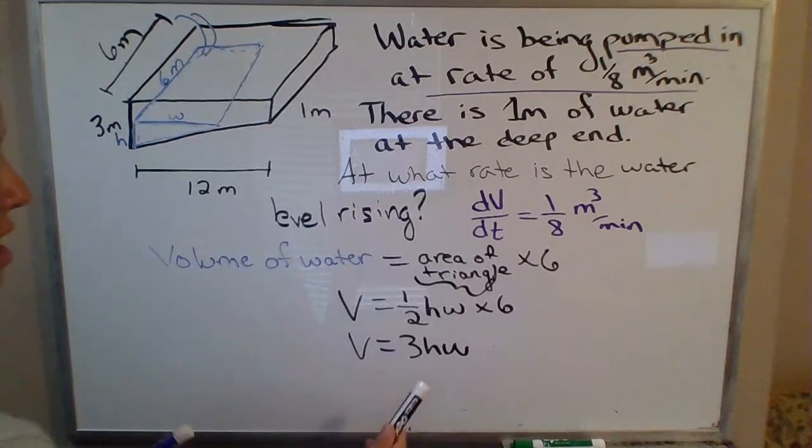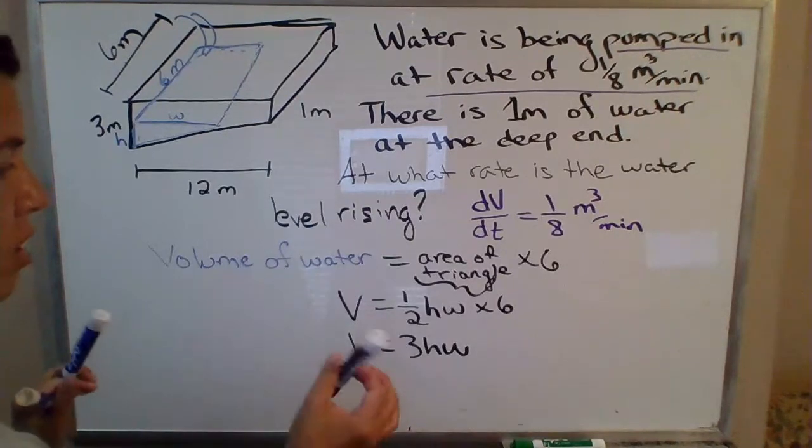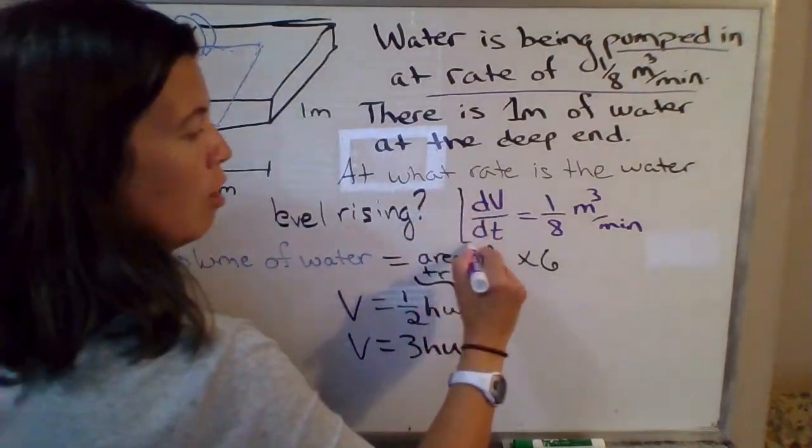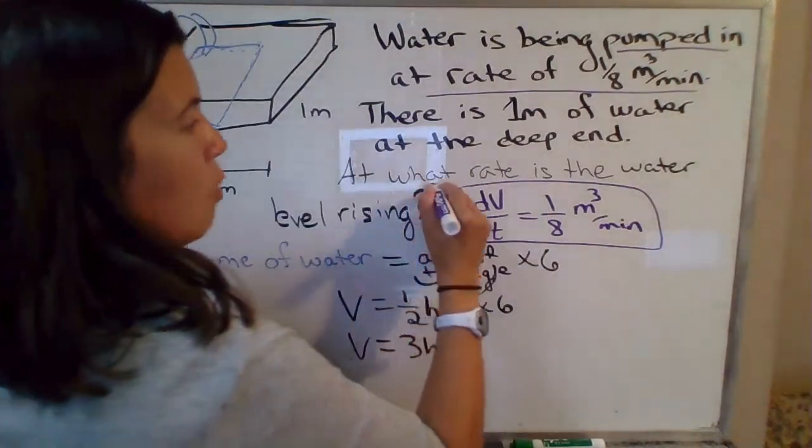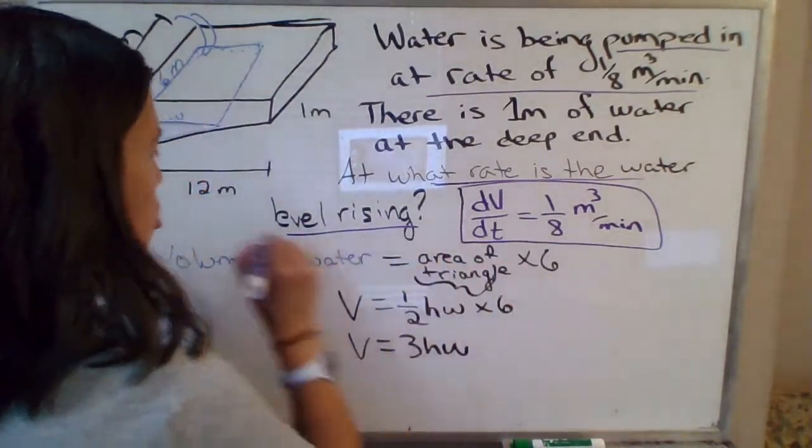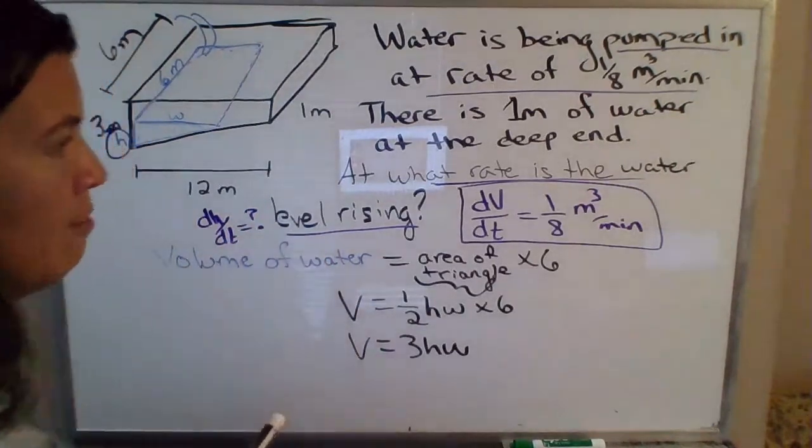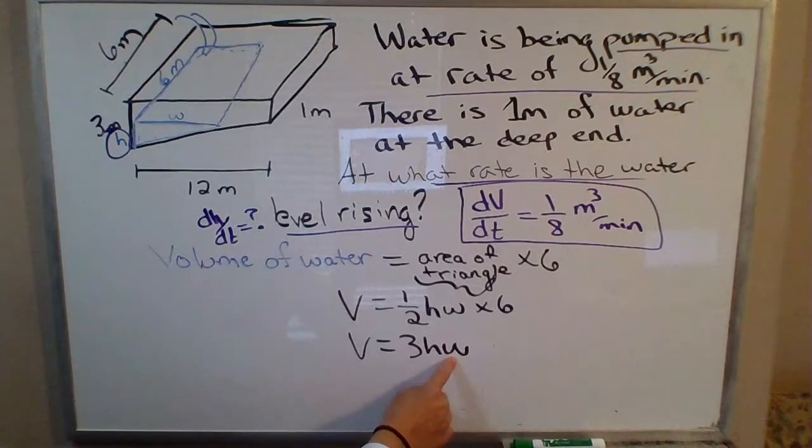Now, before we differentiate, it is best to try to write your equation, if you can, in terms of only the variables that are directly involved. So volume is directly involved, because we have the rate of change for volume, so that's directly involved in this problem. Height is also directly involved, because that's what we're trying to determine at what rate is the water level rising, so we're trying to determine dh/dt. So h and V are the variables that are directly involved in this problem. W is not directly involved.